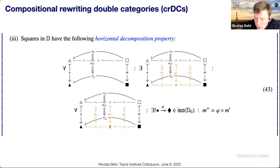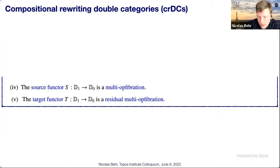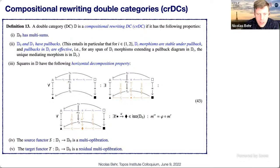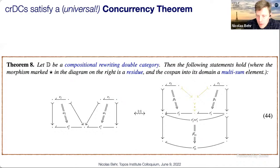The final conditions are that the source functor should be a multi-op fibration and the target functor should be a residual multi-op fibration. Why would this be a characterization of compositionality? We arrived at these definitions from the other direction: starting with the rewriting semantics, then extracting these axioms. But they make sense directly from these definitions, as they give rise to a concurrency theorem.